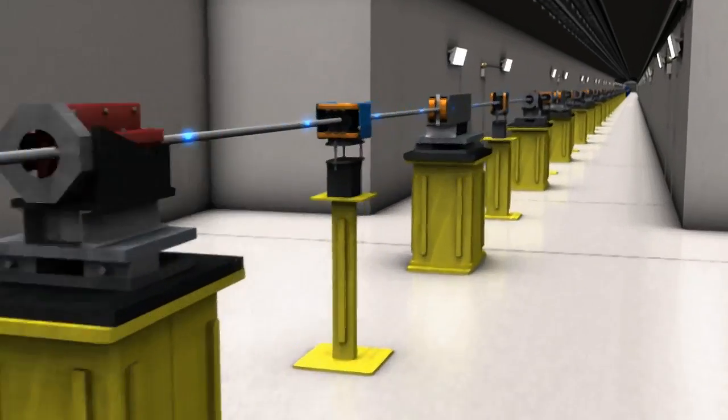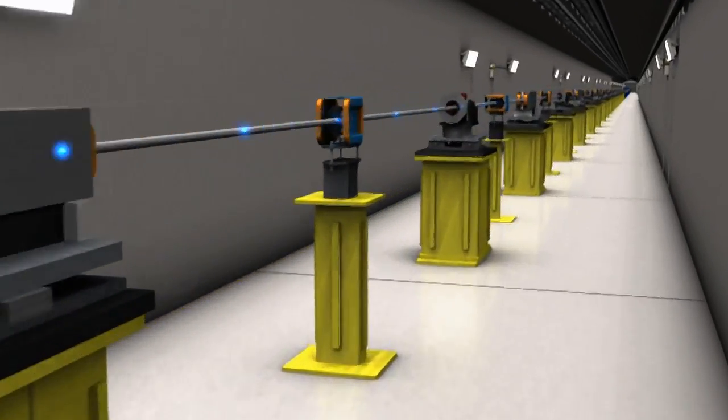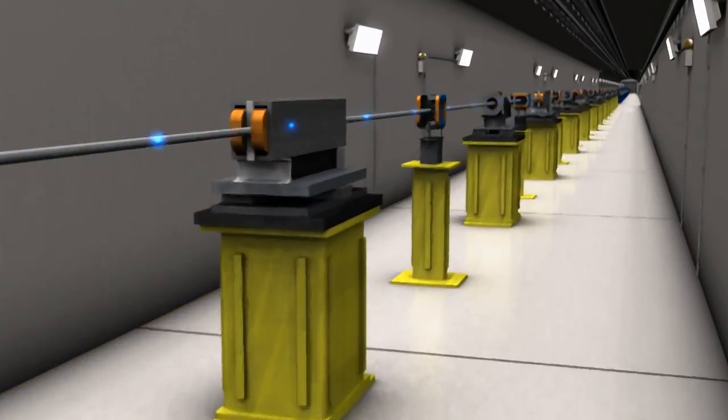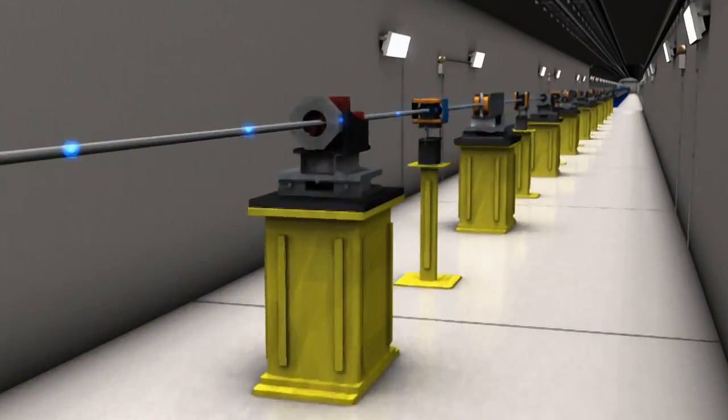The electrons enter the beam transport hall, along which they travel through a series of diagnostic monitors and focusing magnets that help keep the beam precisely shaped and on course.